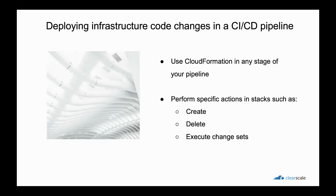How do we deploy infrastructure code changes in a CICD pipeline? Infrastructure is handled by AWS CloudFormation. AWS CodePipeline lets you select AWS CloudFormation as a deployment action in any stage of your pipeline. You can then choose the specific action you'd like CloudFormation to perform, such as creating or deleting stacks and creating or executing change sets. A stack is a CloudFormation concept that represents a group of related AWS resources. AWS CloudFormation is a comprehensive tool that can describe the most comprehensive set of AWS resources as code, and it integrates very well with AWS CodePipeline.